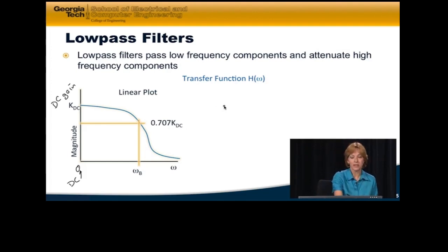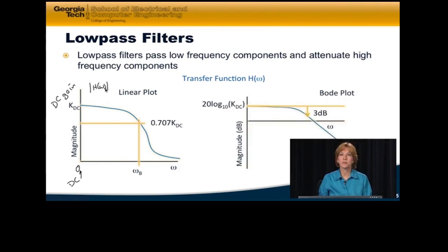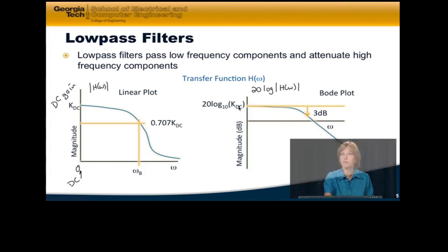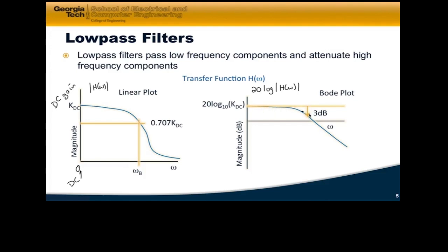The DC gain is that and then the bandwidth is the frequency at which we're at 0.707 of the DC gain. Now this is a linear plot where I'm plotting the magnitude H of omega. The other way we often plot this is a Bode plot where I'm actually plotting 20 times the log of H. So this value is going to be 20 times the log base 10 of the DC gain. And then at the point where I'm at 3 decibels below the DC gain, that is my bandwidth.